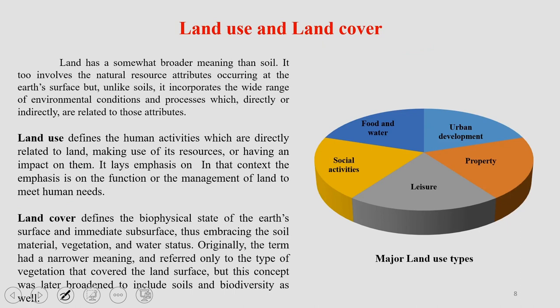Coming to land use and land cover: depending on all these soil properties, different land use and land cover patterns are decided and observed across the world. Land use defines the human activity on land — like agriculture, fishing, fishery, or animal husbandry — based on which land is used for which purpose. Land cover defines the biophysical state of an earth surface and how the land, soil, vegetation, and water in a particular area are available. Originally, the term referred only to the type of vegetation, but the concept later broadened to include soils and biodiversity as well.